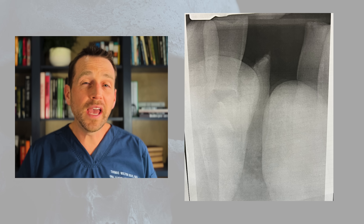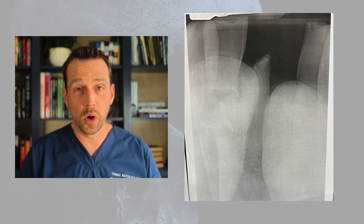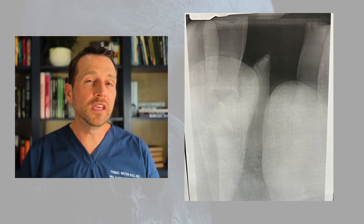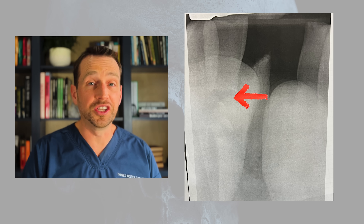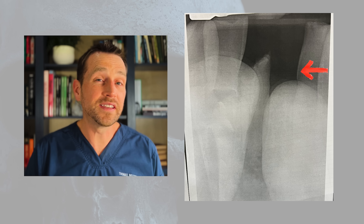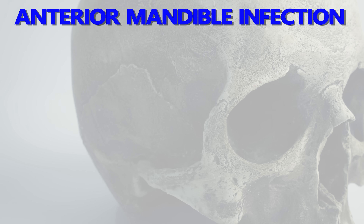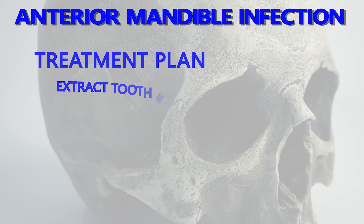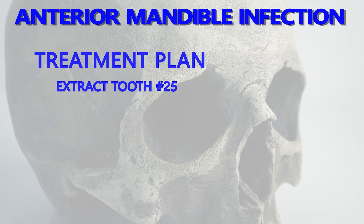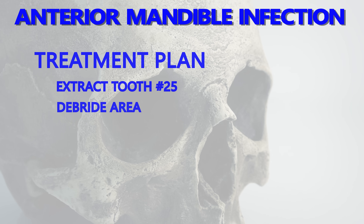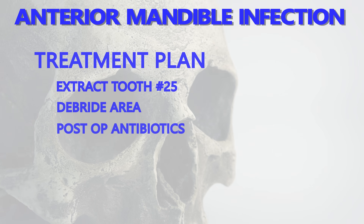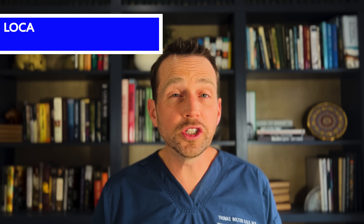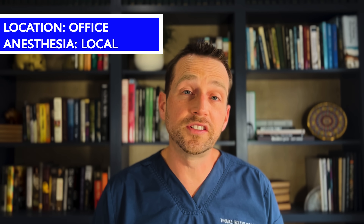Her dentist took a radiograph before sending her to my office. She has enormous mandibular tori, which are these radiopaque images here and here. It is clear that tooth 25 is the source of this infection. The tooth has caries where it fractured. The plan is to remove the source of this infection — the broken tooth — clean the area out thoroughly, and place the patient on antibiotics. This procedure is done in the office under local anesthesia.